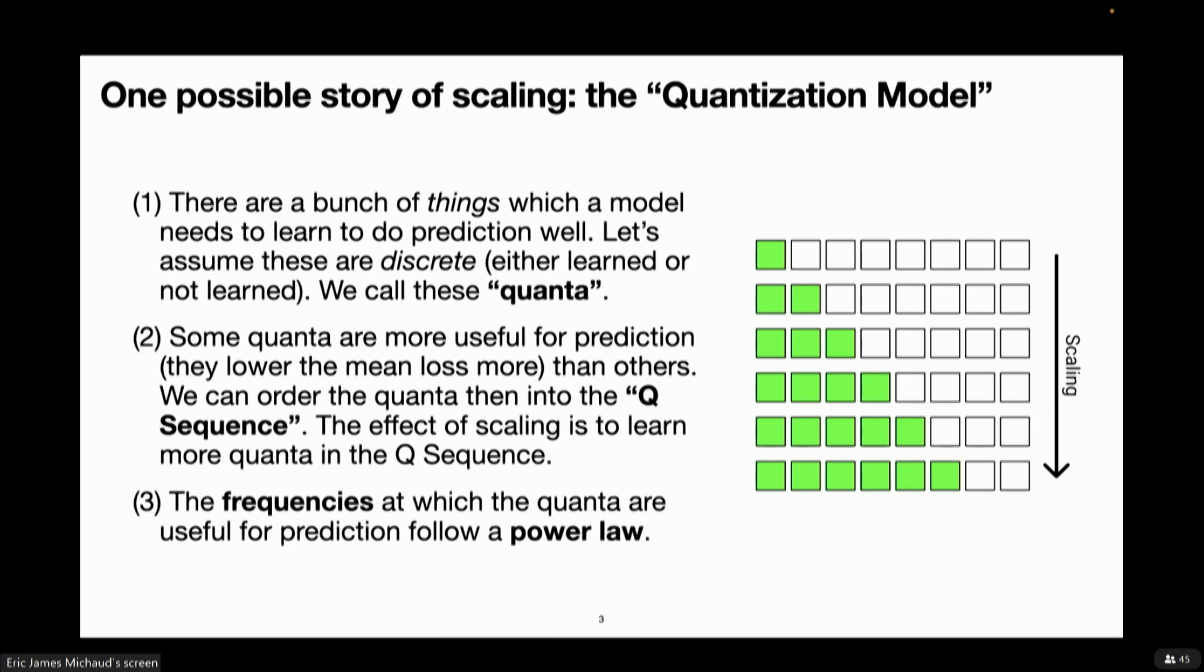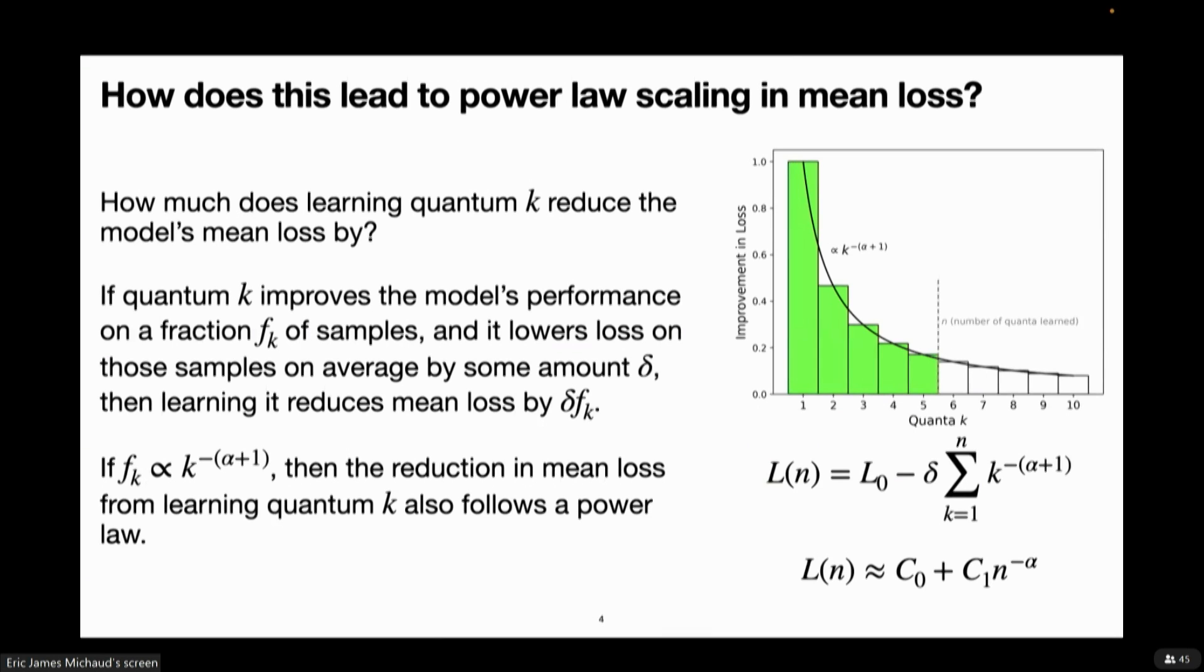We're going to call these the quanta of the prediction problem. And next we're going to assume that some of these things are going to be more useful for prediction than others. You might think that basic grammatical rules are going to be very frequently useful for predicting text on the internet, and so not understanding them is going to be very costly, but maybe very infrequently do you need to understand very esoteric physics to do prediction well of words on the internet. So if you're only going to learn one thing, better to learn grammatical rules than esoteric physics, but if you have a big enough network, maybe you'll eventually learn the physics, because there are situations where that is useful for prediction. And lastly, we're going to assume that the frequencies at which these pieces of knowledge, these quanta, are useful for prediction follow a power law.